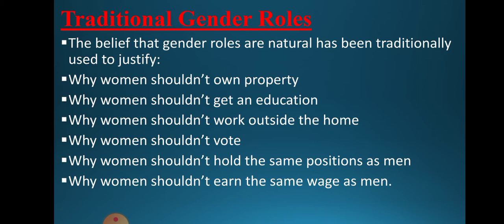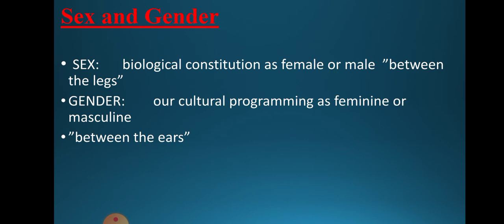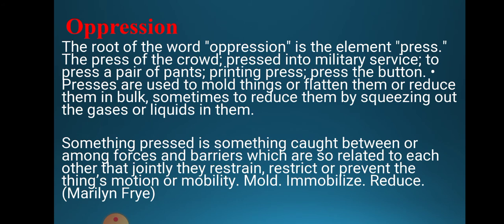Sex and gender is a key distinction. Sex is the biological constitution of male and female — it is natural. Gender, however, is social and cultural programming — it is between the ears, not the body. Feminists accept that males and females differ biologically, but argue that gender is about how society deals with and places people based on their physical traits, assigning superiority or inferiority accordingly.